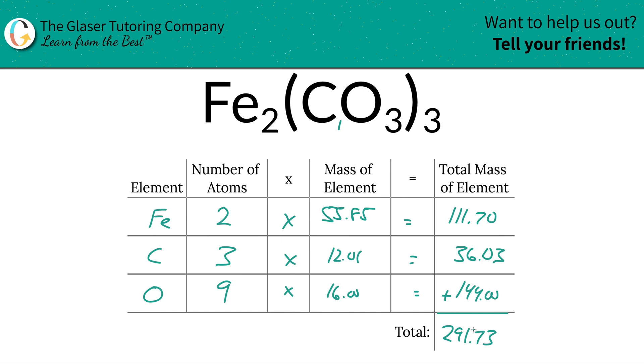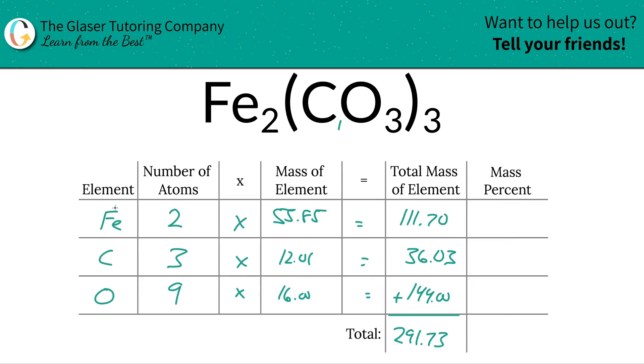Now that we found the total mass, all we're simply going to do is we're going to add a column to this table, and the rest is cake. So now to find the mass percent of, let's say, iron, we're going to simply take the total mass of that iron, 111.70, divided by the total mass of the entire compound, 291.73. If you're wondering what the units are, it actually doesn't matter, because the units will cancel themselves. So it could be grams per mole, amu, it doesn't really make a difference. But this is a simple percent calculation, part over whole times 100.